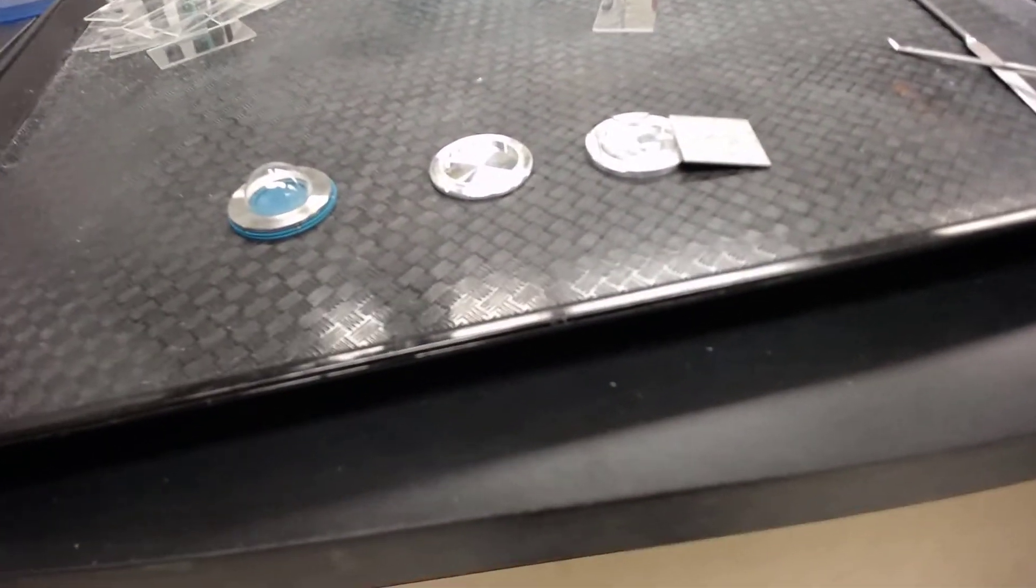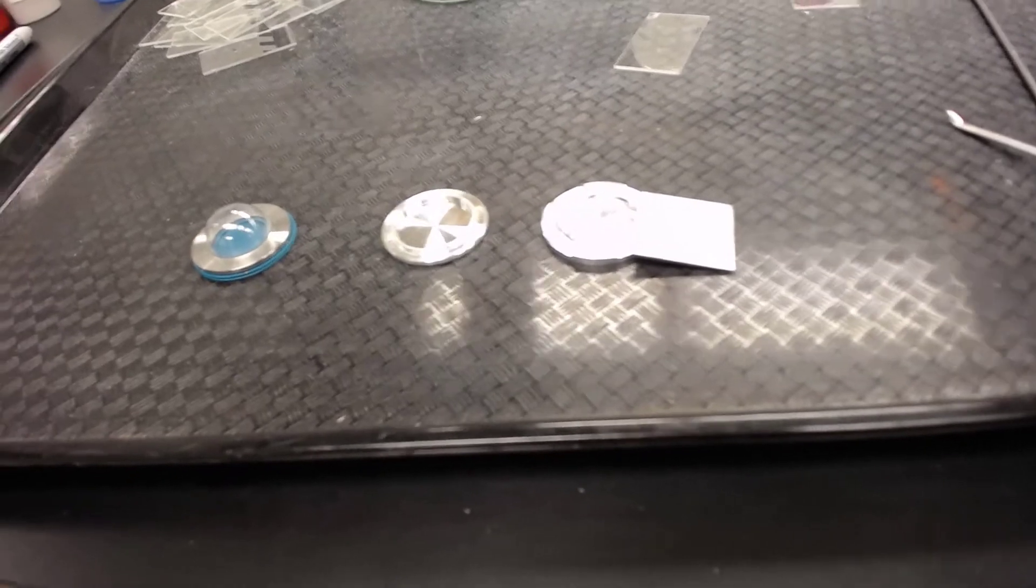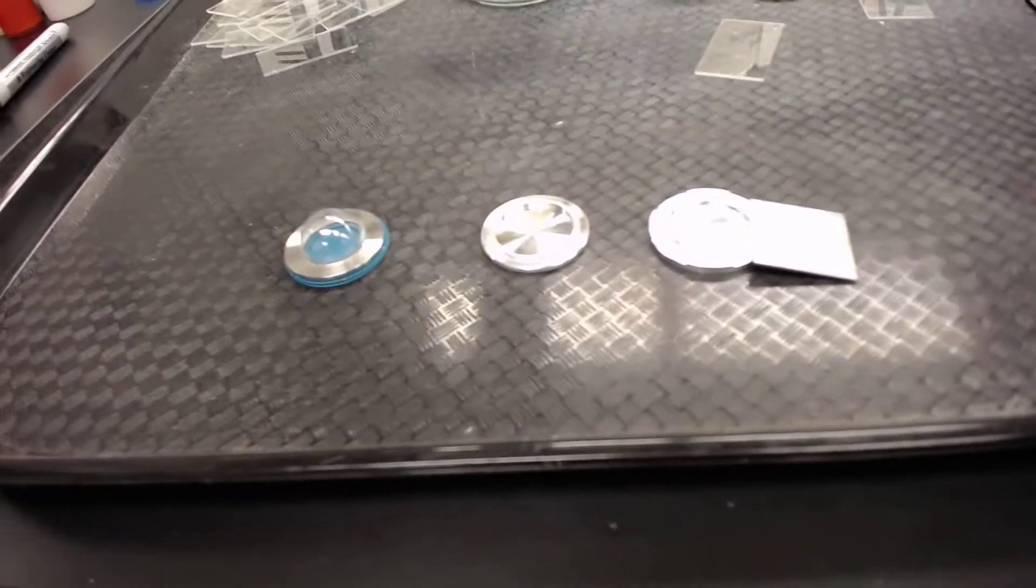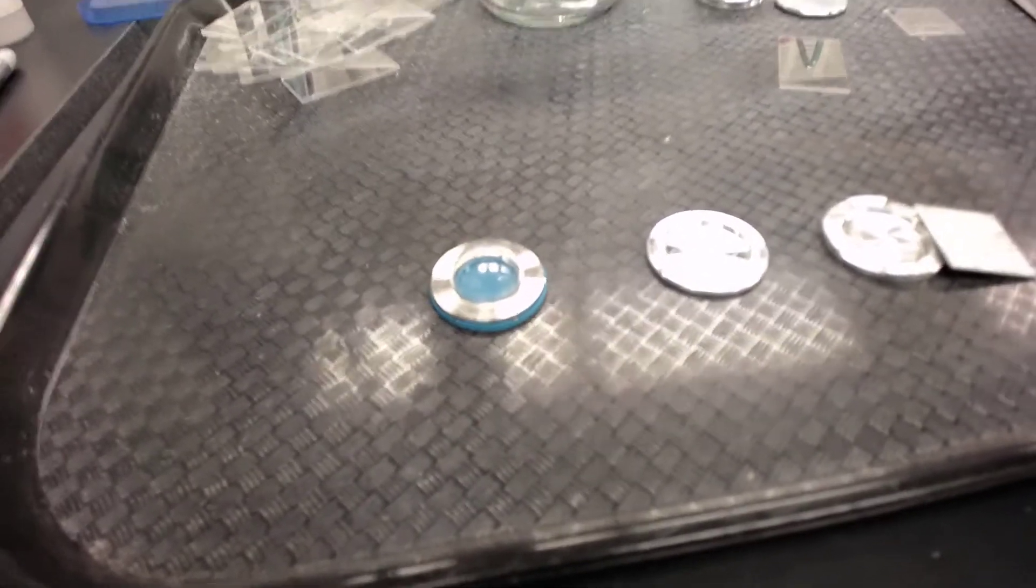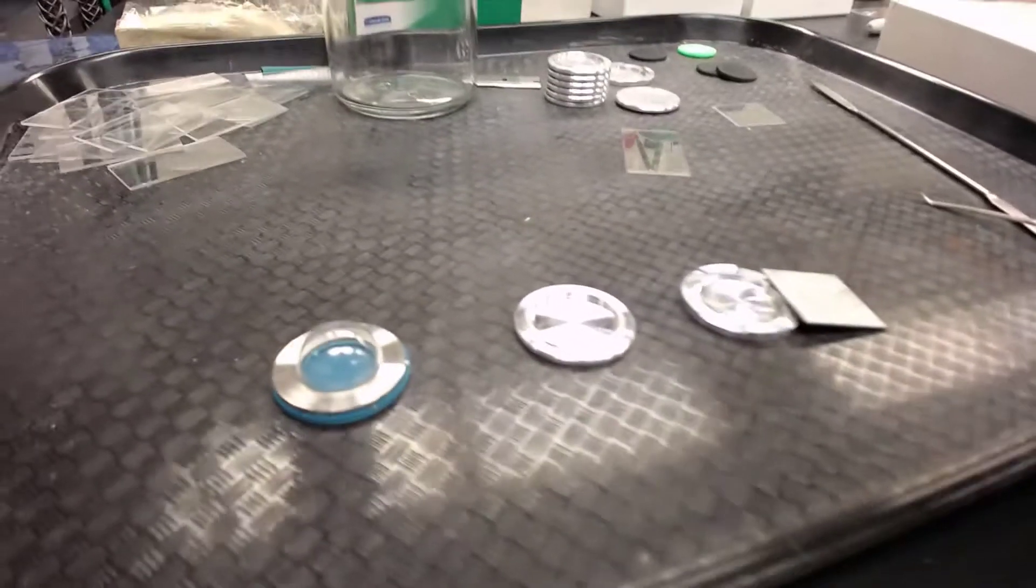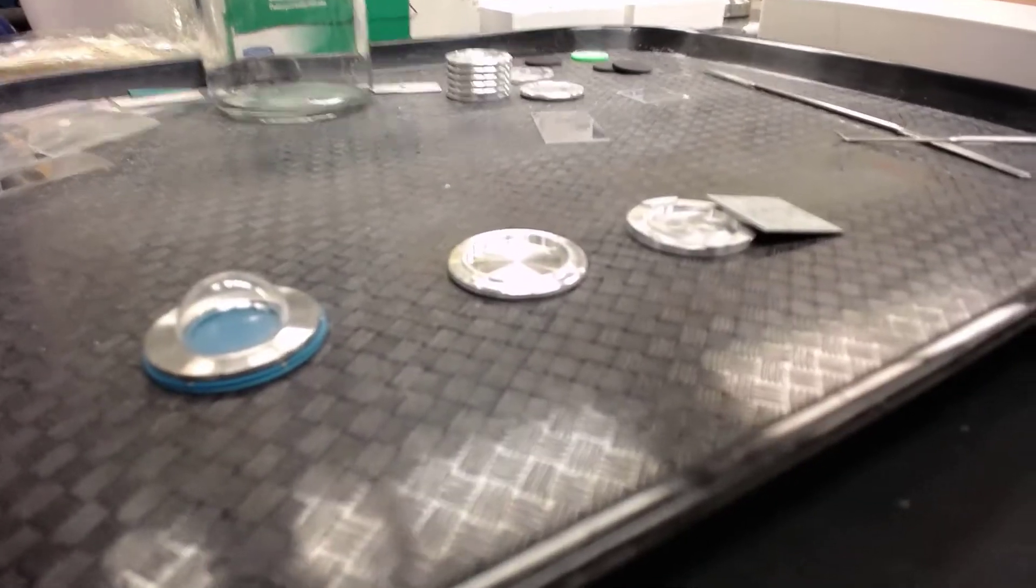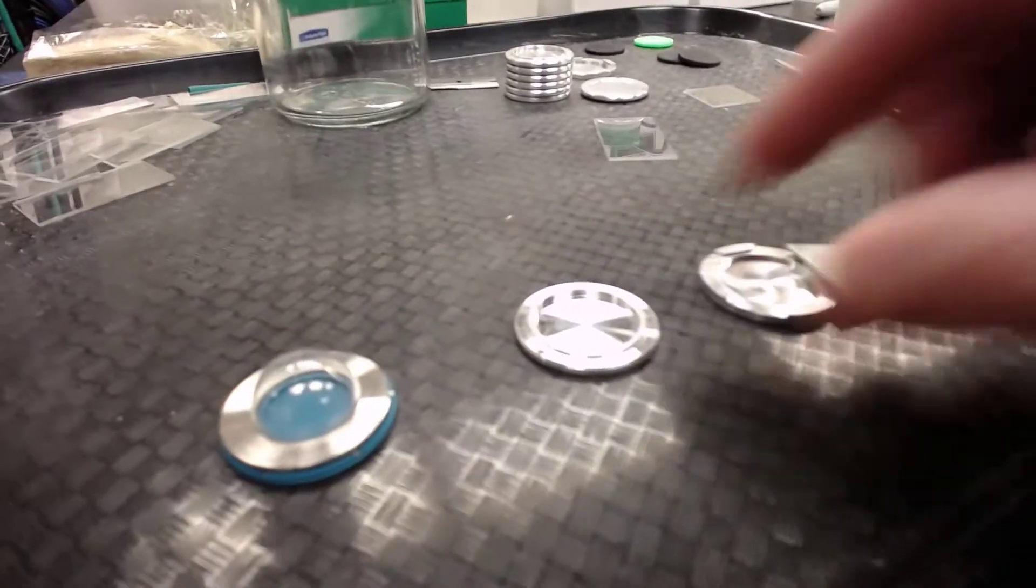Here we have a few different sample holders that we use for different types of samples. The one on the left happens to be an airtight domed holder for powders that might react with air. Sorry we have a little glare here. In the middle is a standard powder holder.